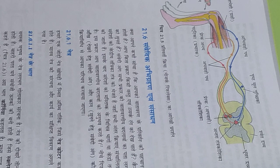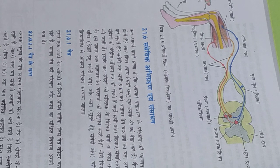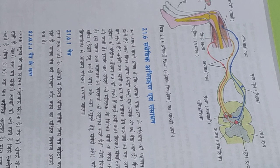Voluntary actions are those which we do according to our own will, like moving our hand, holding something, or walking — we are doing these as per our wish, so these are voluntary actions. Involuntary actions are those which we do not perform by our own will; our body performs them automatically.